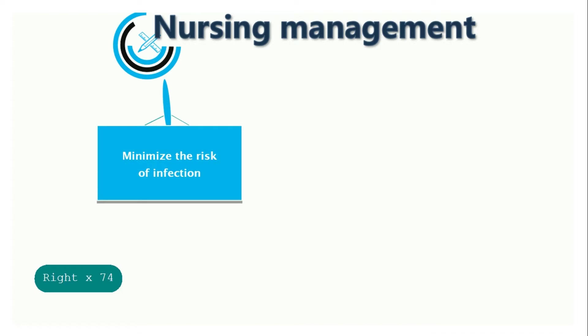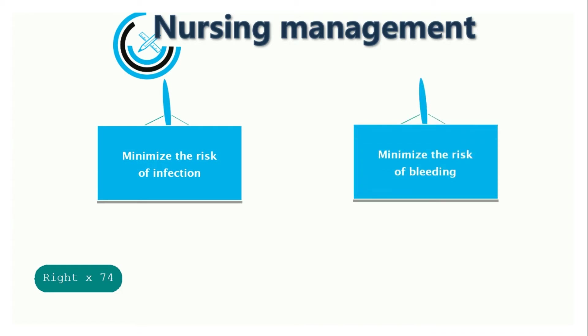For nursing management, patients with aplastic anemia are vulnerable to problems related to erythrocytes, leukocytes, and platelet insufficiencies. They should be assessed carefully for signs of infection and bleeding. To minimize the risk of infection, implement reverse or protective isolation. Provide private room. Practice strict handwashing. Encourage personal good hygiene, including good oral care, daily shower or bath with mild soap, and perirectal care after using the toilet. Monitor vital signs including temperature frequently. Notify health providers of fever. Minimize invasive procedures or possible trauma to skin or mucous membranes.